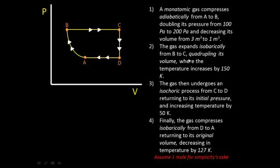Step 2: the gas expands isobarically from B to C, which is this part of the PV diagram, quadrupling its volume, where the temperature also increases by 150 Kelvin. Step 3: the gas then undergoes an isochoric process from C to D, returning to its initial pressure — that's this process on the PV diagram — and it increases temperature by 50 Kelvin.